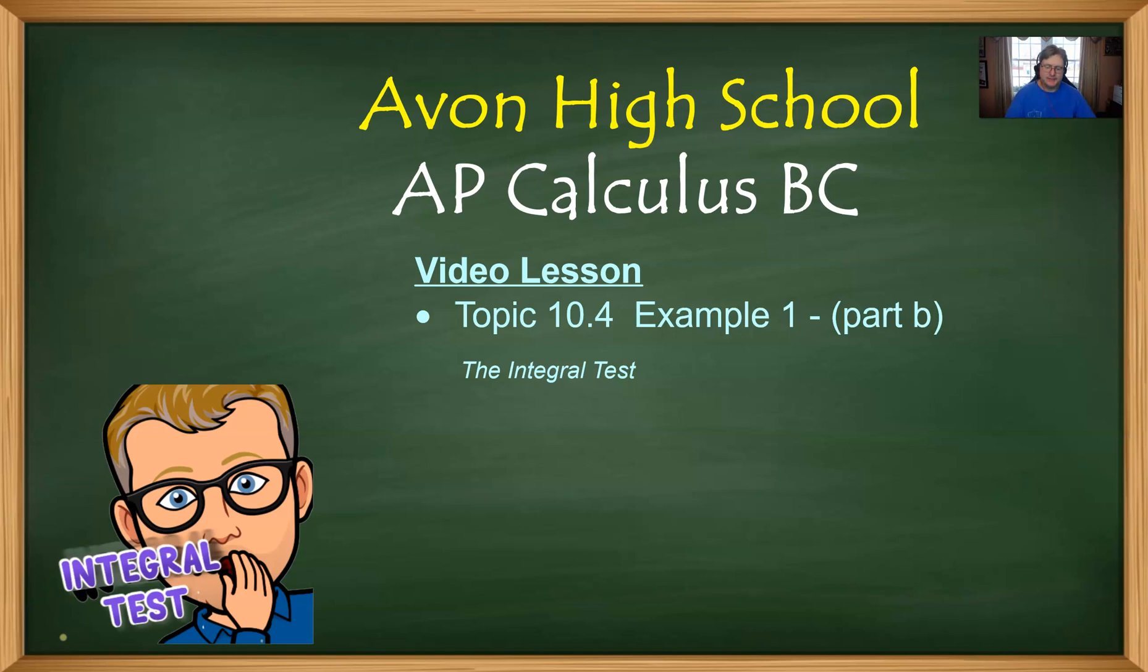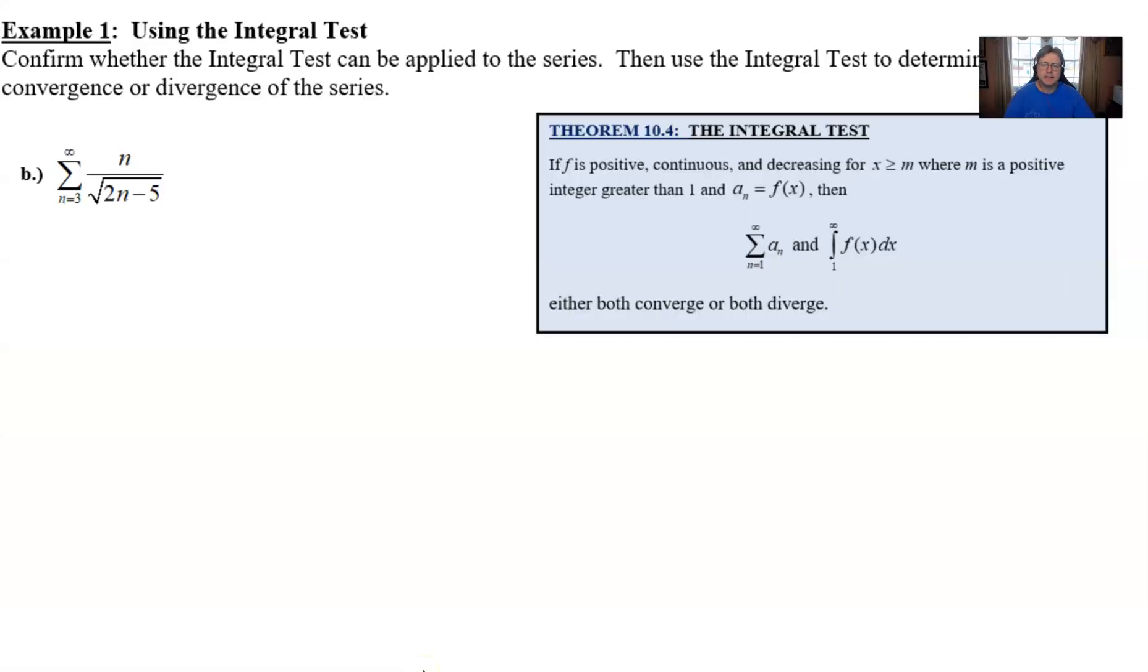Welcome back to our example 1 AP Calc BC students from topic 10.4. We're going to take a look at our part B in our discussion of the integral test. So hopefully you had a chance to take a look at example 1A. In example B here, we're doing the same thing. We're going to confirm whether the integral test will be applied, and if it can be applied, let's determine the convergence or divergence.